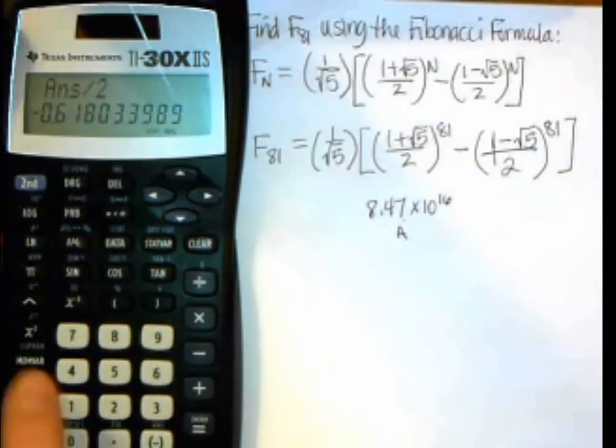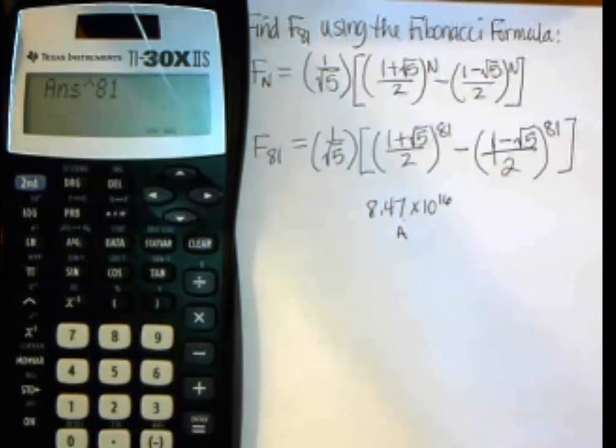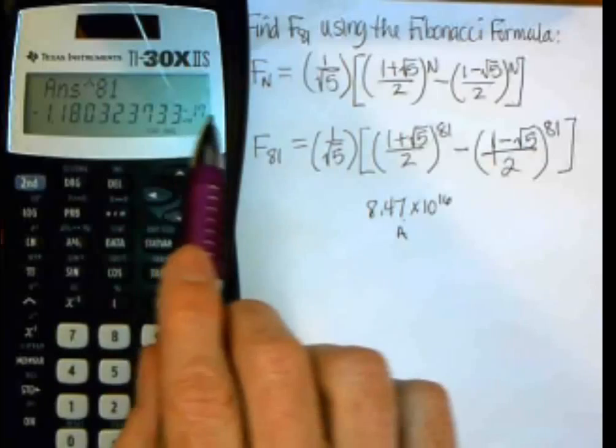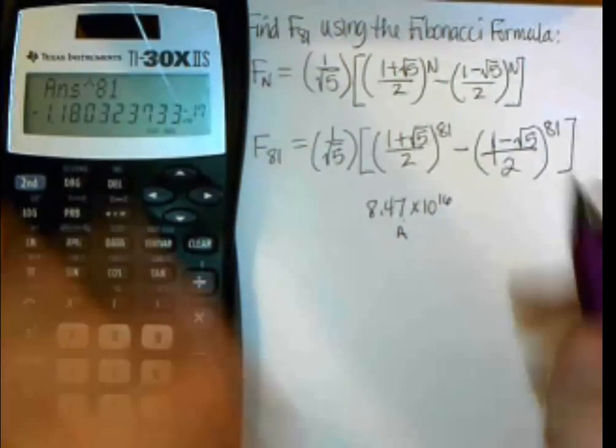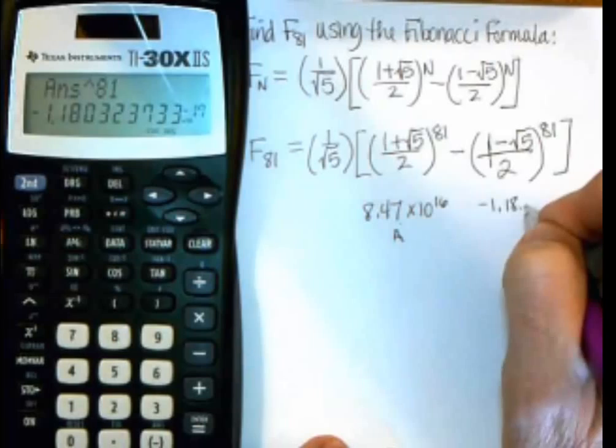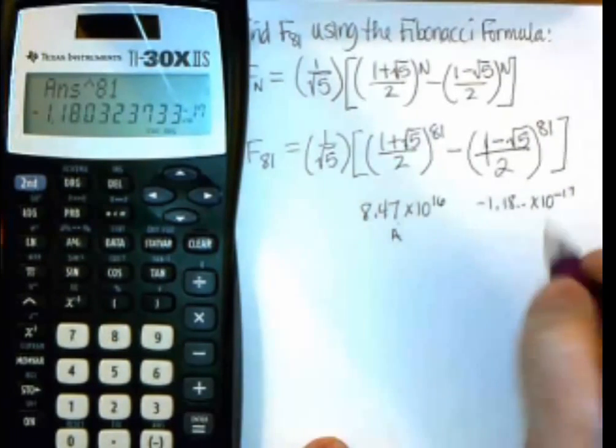Now I need to take it to the, so I'm going to use the caret, to the 81st power, push equals, and I have a really, really tiny number, because it has a negative exponent there. And so I'm going to write that down, negative 1.18, and it goes on times 10 to the negative 17th.